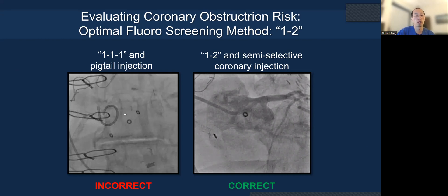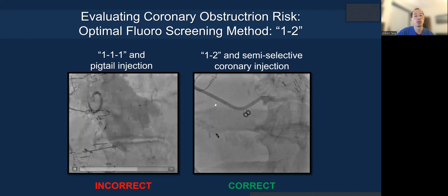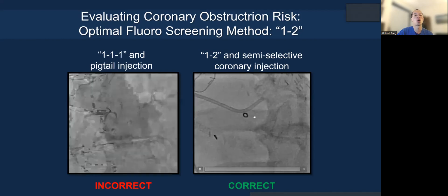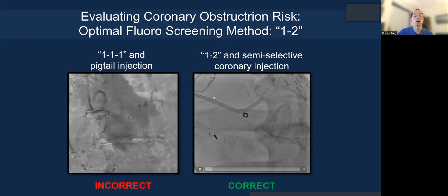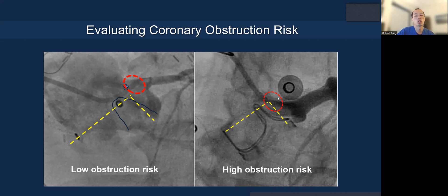To evaluate coronary obstruction risk, we use what we call a one-two view. The correct view is the LAO cranial view where you overlap the two dots of the commissural posts, then perform a selective one-two injection to determine risk. On the left side example, I traced out the surgical valve commissural posts — there's plenty of room to engage the coronary, so risk is likely low. On the right side, there's very little sinotubular junction and a very low left main. Once the TAVR is implanted, the leaflet will extend along the yellow hash line and could potentially cause coronary obstruction.